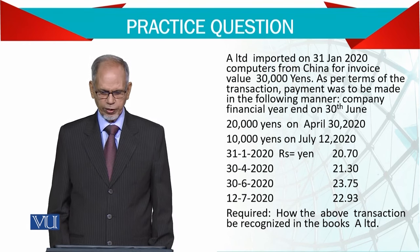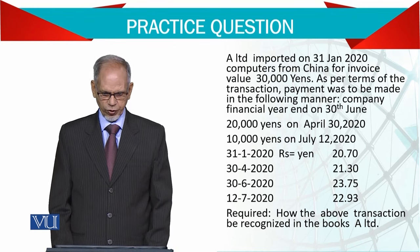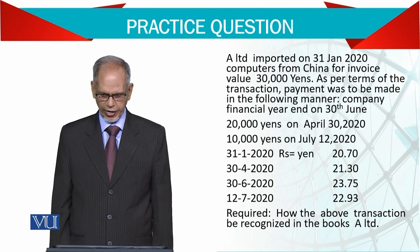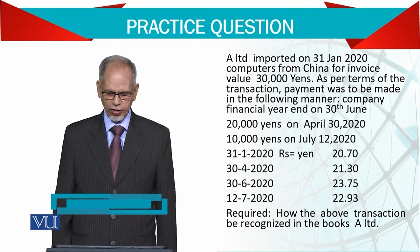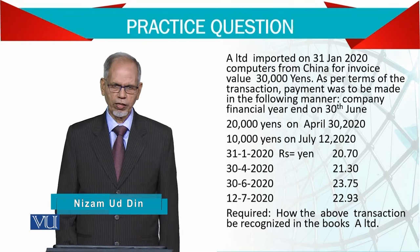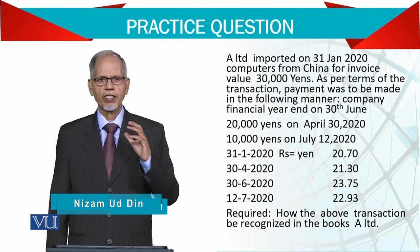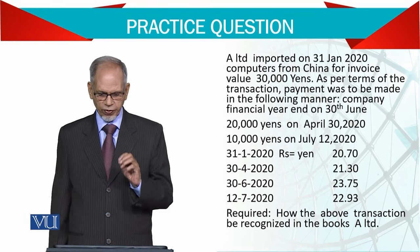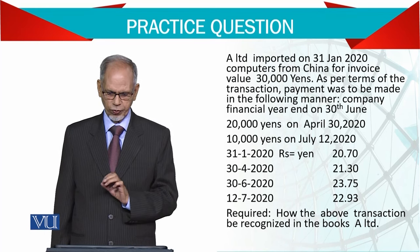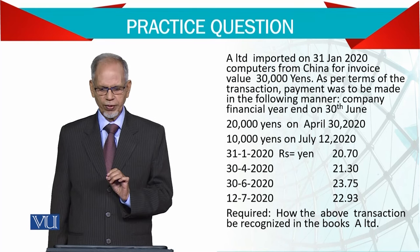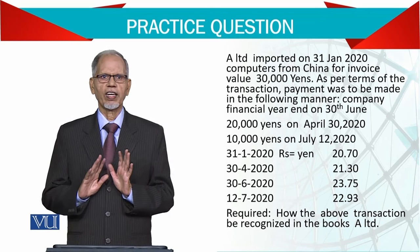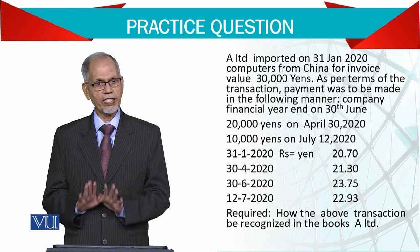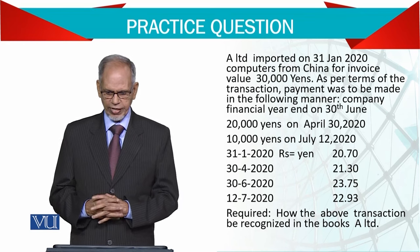On 31st January, the company imported a computer and has to make payment. Payment details: 20,000 yen on April 30th and 10,000 yen on 12th July. The transaction date is 31st January. The yen to rupee rate on 31st January is 20.7, so you book the entry at this rate — debit computers, credit accounts payable at this rate.